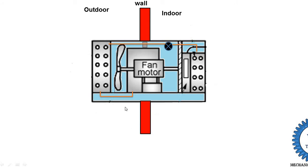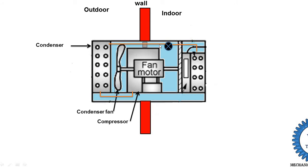Looking at the various components: this is the compressor, this part is the condenser, this is the condenser fan, then there is the expansion device, and this is the evaporator and evaporator blower. So these are the total 6 components of the window air conditioning system.